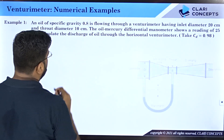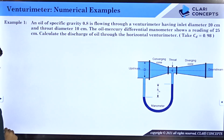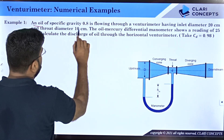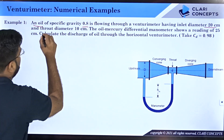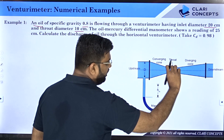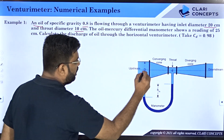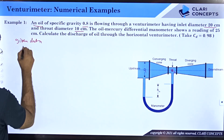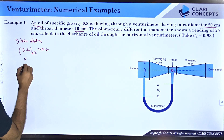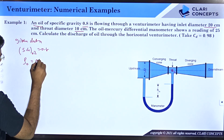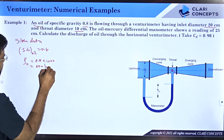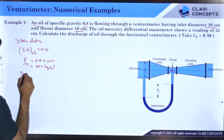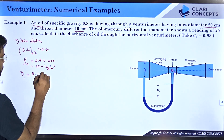An oil of specific gravity 0.8 is flowing through a venturimeter having inlet diameter d1 = 20 centimeter and throat diameter d2 = 10 centimeter. Given data: specific gravity of oil is 0.8, so density of oil is 0.8 × 1000 = 800 kg/m³. d1 = 20 cm = 0.2 meters, d2 = 10 cm = 0.1 meters. We always use values in meters.